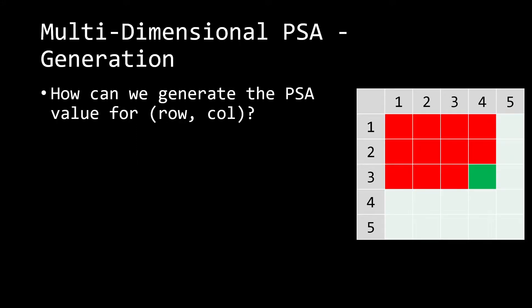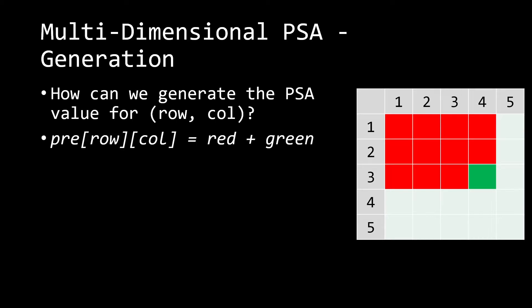So the question is: how can we efficiently generate the prefix sum array for any row and column? One naive way would be to go over every previous element, but that would take O(N²) time per cell. If we have N² cells and each takes O(N²) to compute the sum, that gives us an O(N⁴) solution — too slow. Instead, we're going to express pre[row][column] as the red region plus the green region.